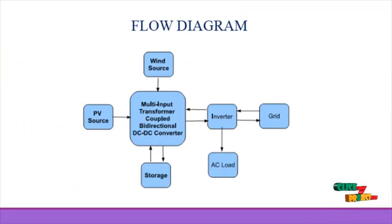Next we see the flow diagram of our product. This is our flow diagram. In this flow diagram consists of three input sources: photovoltaic source, battery, and wind source.